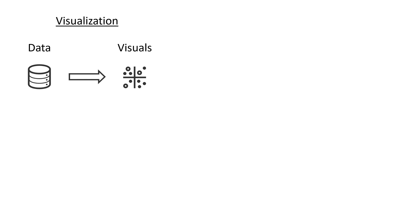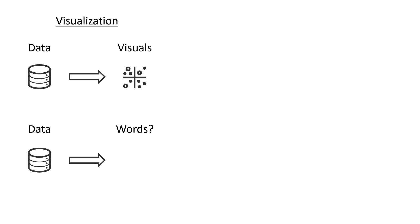We can understand visualization as a form of a metaphor that maps data to visuals. But what if we push this metaphor beyond the visual? For example, we can map data to words, and learn that our data points relate like dog, house, and chimney.